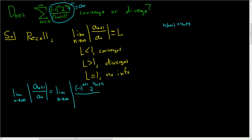Then you divide by — well, here you replace n with n+1, so you get 2n+1+1, which is 2n+3. So you get 2n+3 factorial. This here is a_sub_(n+1).